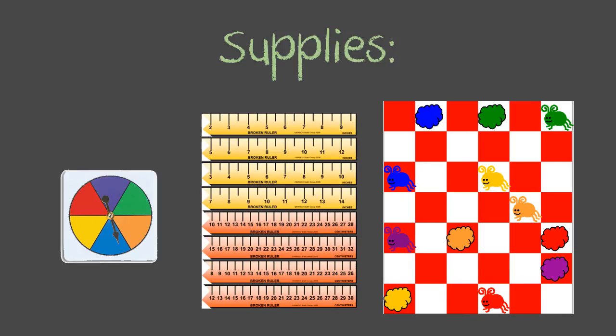The supplies provided in the pouch along with the information sheet and directions include a game board with ants and crumbs on it and broken rulers. There will be a set of eight rulers, and if you notice, they all start with a different number. They don't start at zero because all the rulers are to be broken. There will also be a six colored spinner.